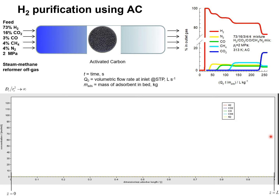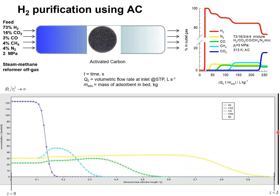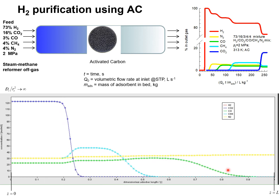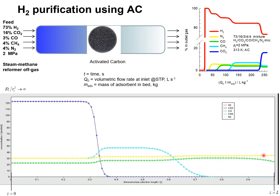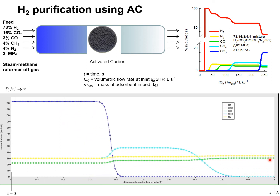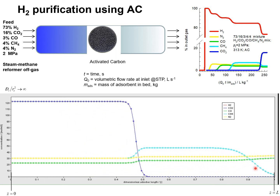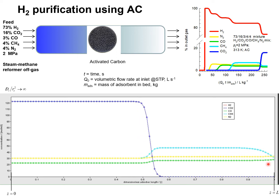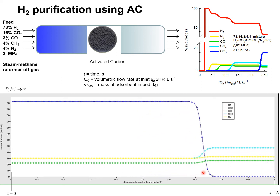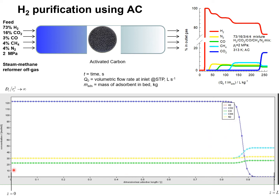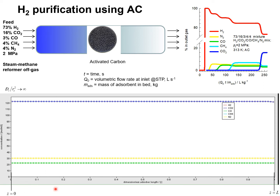Let's have a look at the animation of the transient breakthrough. Hydrogen is the component that breaks through the earliest, followed by nitrogen, followed by carbon monoxide, then methane. CO₂ is the last component that traverses the length of the bed from 0 to length L.